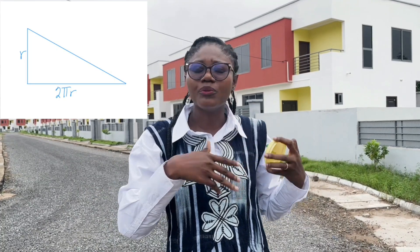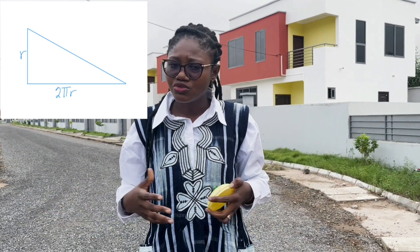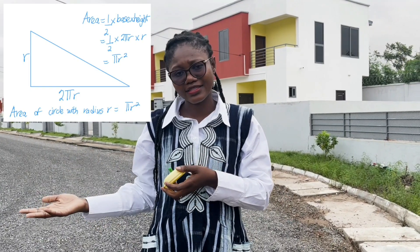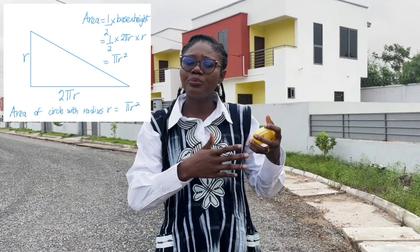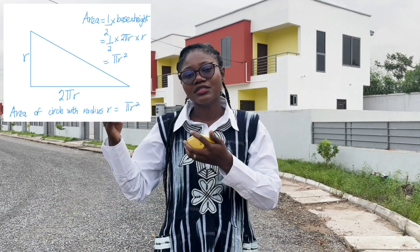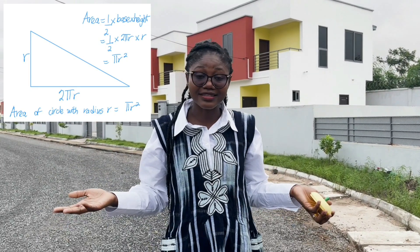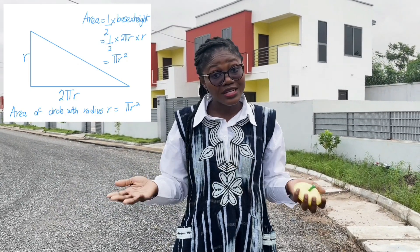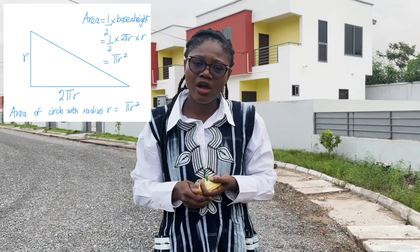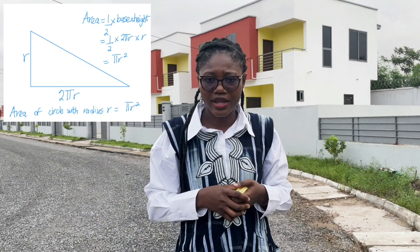This triangle will have a base equal to the circumference of the circle, which is 2πr, and a height equal to the radius r. The area of a triangle is half times base times height. So if you compute ½ × 2πr × r, you arrive at πr². The area of a circle can be derived in this practical way.